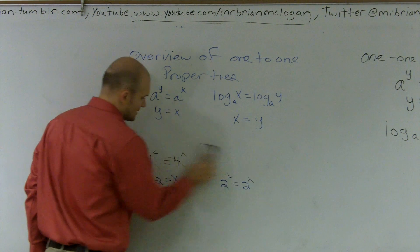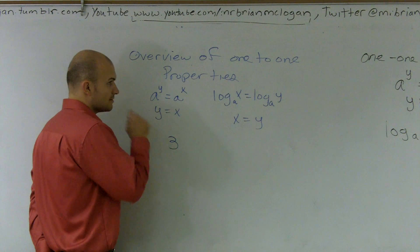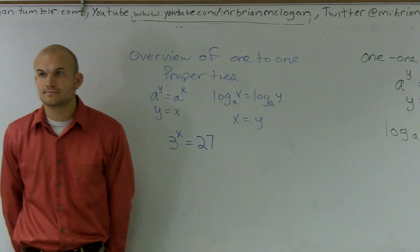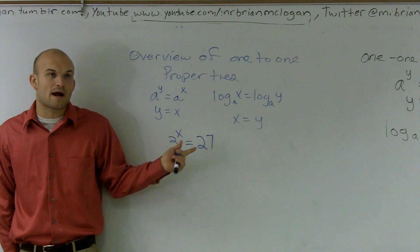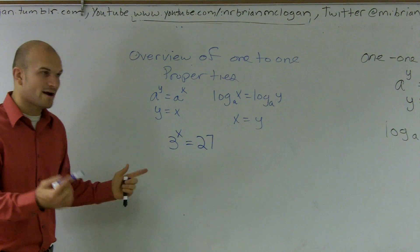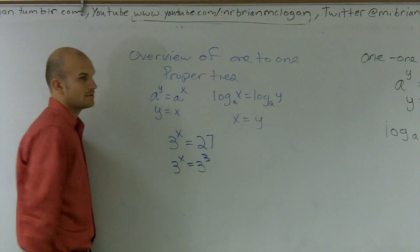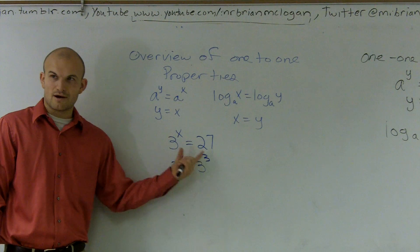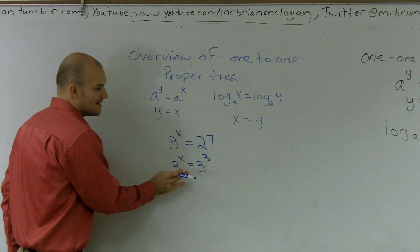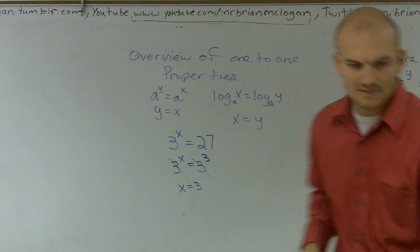So why can we use this, how can we use this? Well, the way that we want to use this is, let's say I have a problem. Let's say I have three raised to the x power equals, and I'll just pick some easy numbers here, 27. And if I just wanted to write this as, how can I use my one-to-one properties to solve this problem? Now, I know you guys can do this in your head. I can say three raised to what number gives you 27? Three, right.